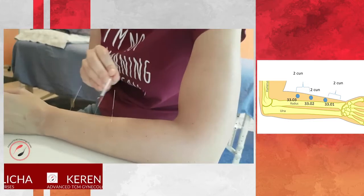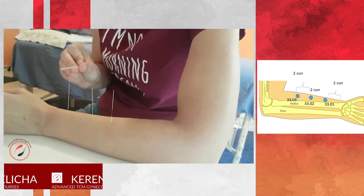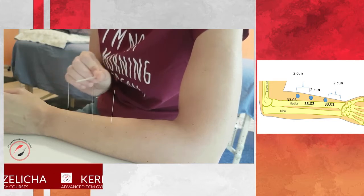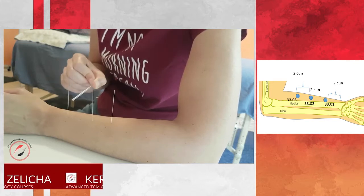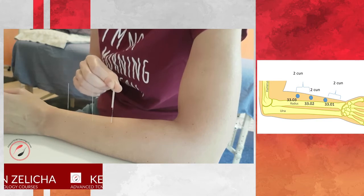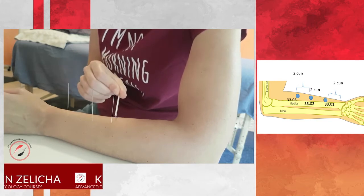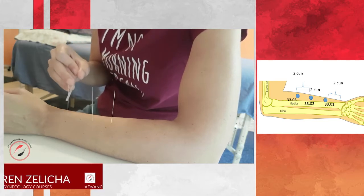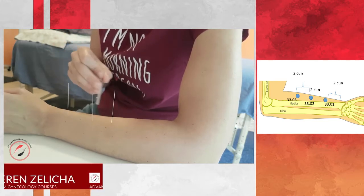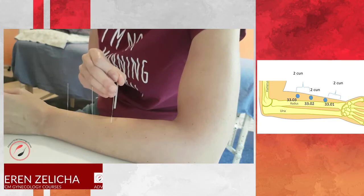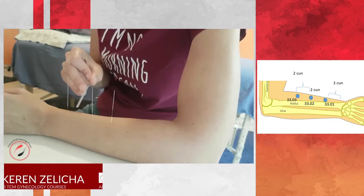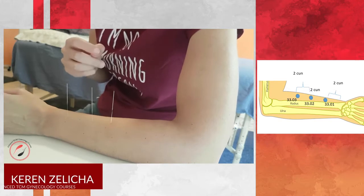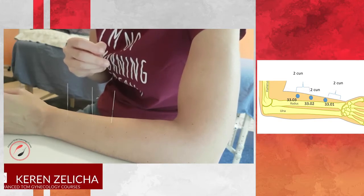These points are very effective for gynecology disorders, menstrual disorders. I frequently use them for leucorrhea, vaginal discharge, vaginal itching. I also think about them for hemorrhoids—even in pregnancy when she has hemorrhoids, I usually combine these points with liver 3 or bladder 57.